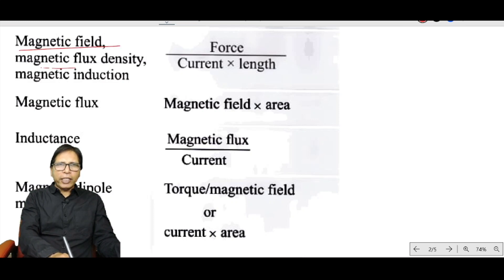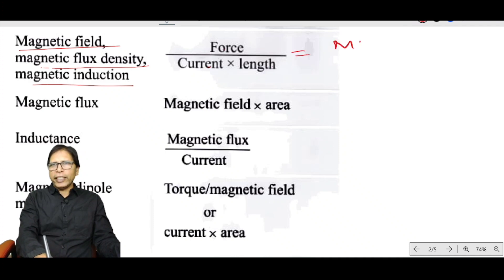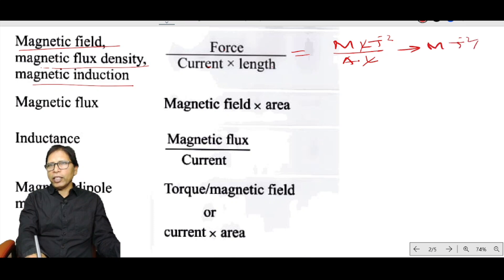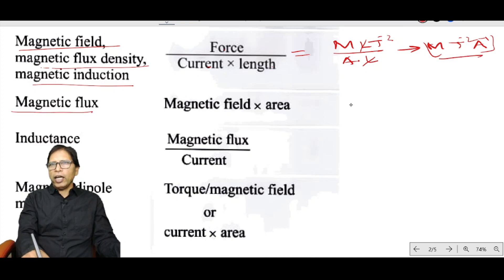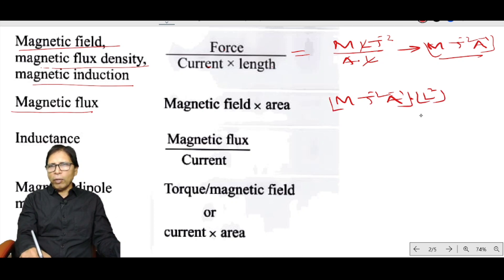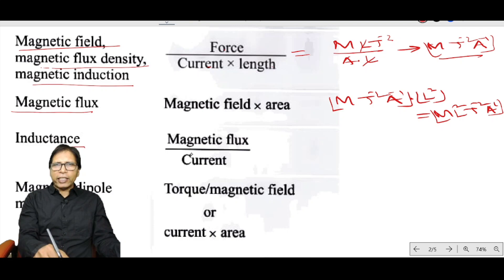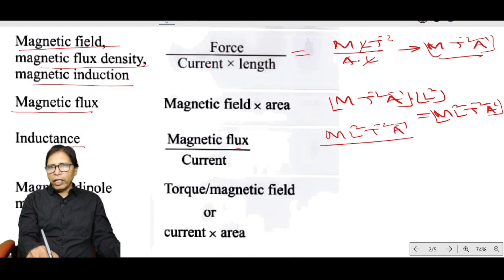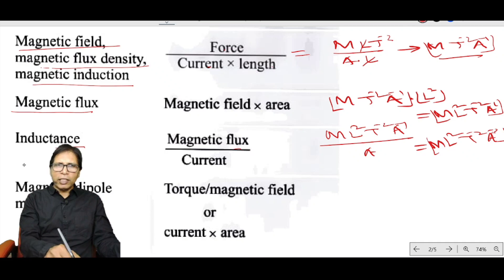Magnetic field, magnetic flux density, and magnetic induction equal force divided by (current × length): MLT⁻² ÷ (A × L) = MT⁻²A⁻¹. Magnetic flux equals magnetic field × area: MT⁻²A⁻¹ × L² = ML²T⁻²A⁻¹. Inductance equals magnetic flux divided by current: ML²T⁻²A⁻¹ ÷ A = ML²T⁻²A⁻².